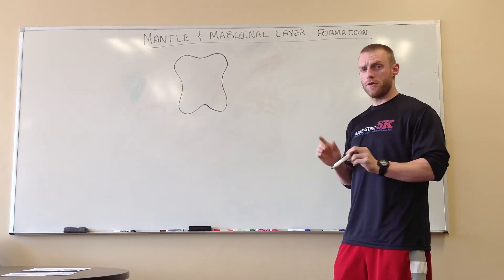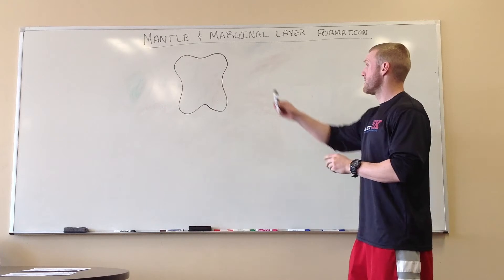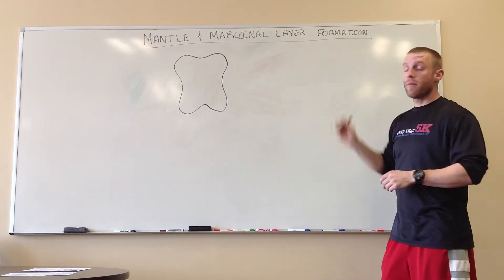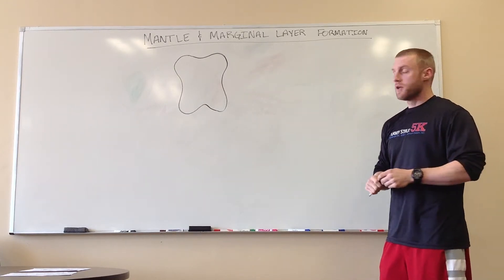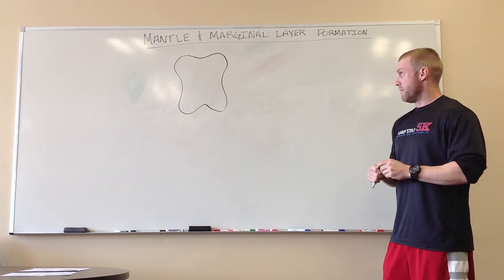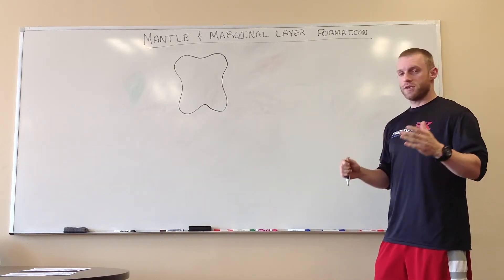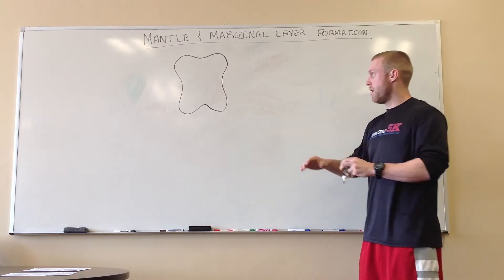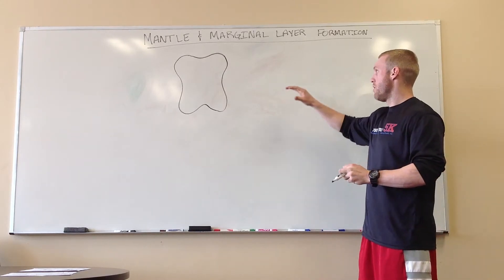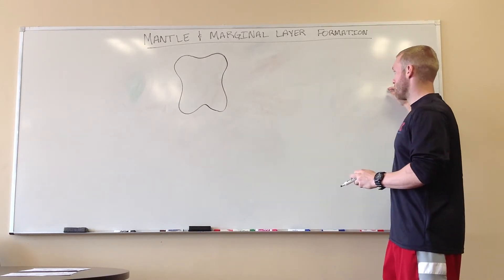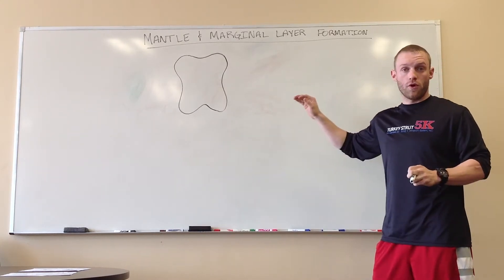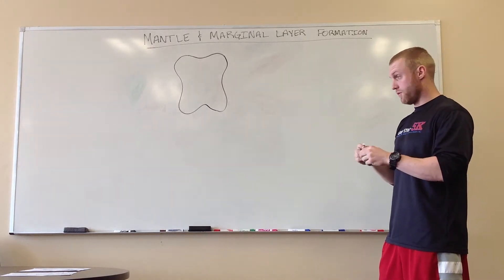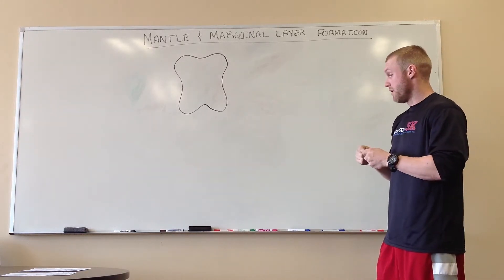What I'm going to cover is the mantle and marginal layer formation. It's pretty much a transformation of what your spinal cord root is going to look like, with the dorsal and ventral horn and everything.